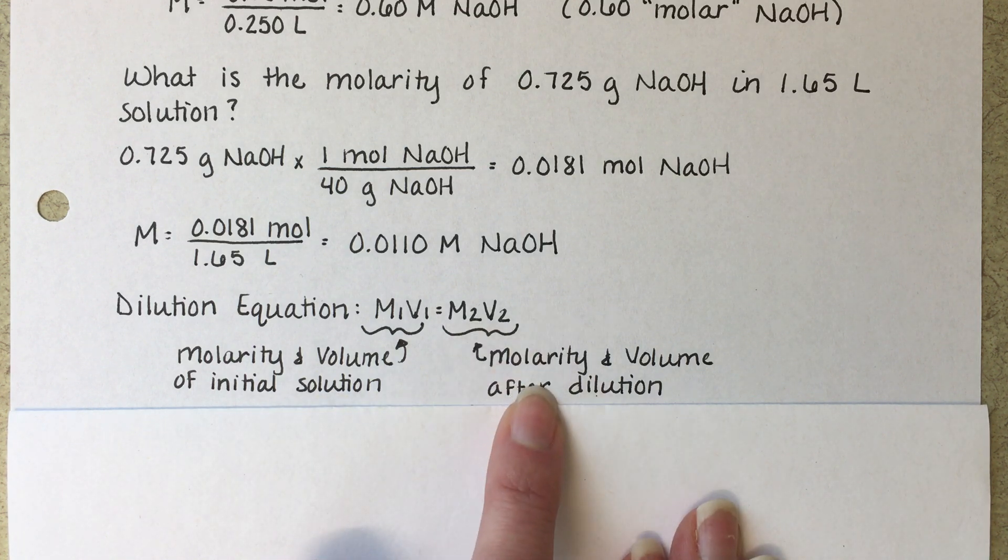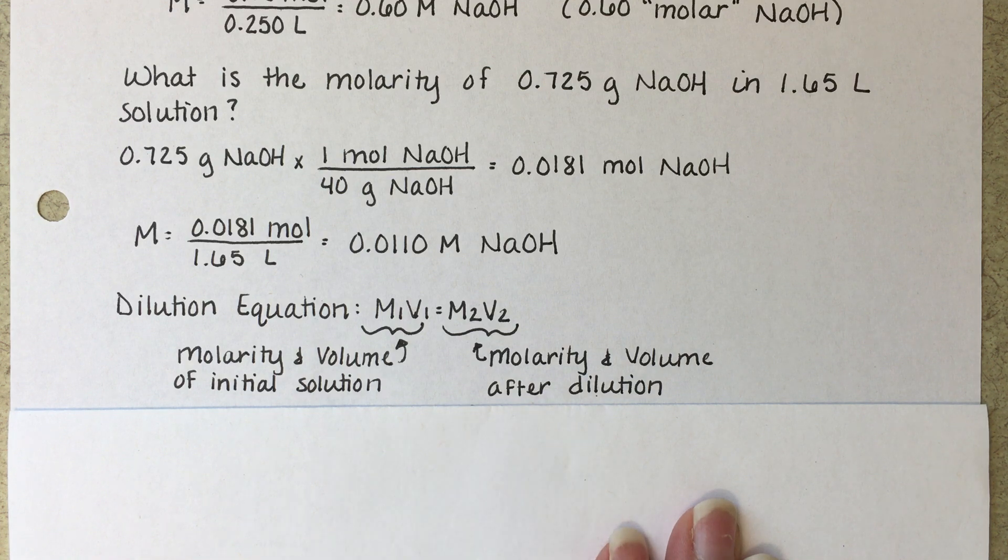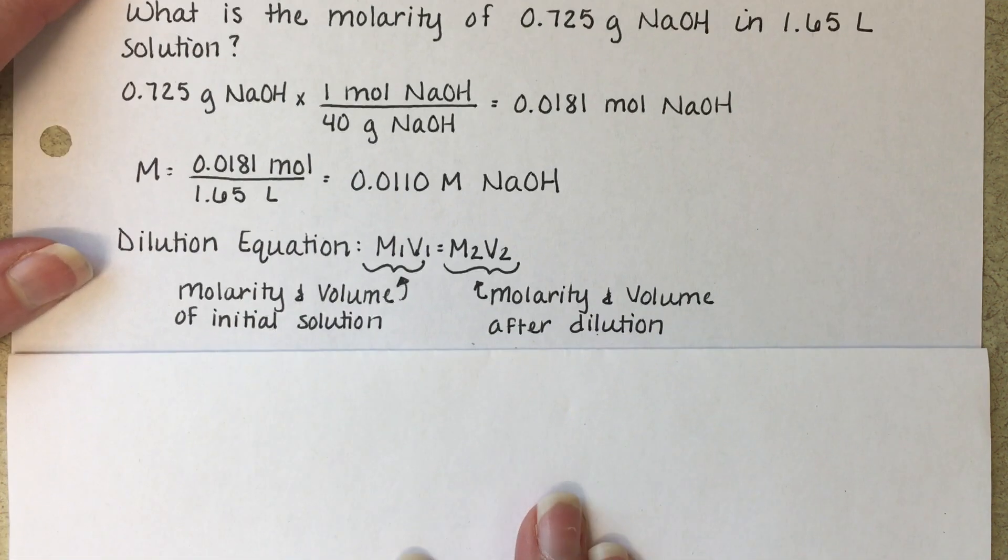The ones represent the molarity and volume of the initial solution before you've diluted it. And the twos represent the solution after you have diluted it. So this is also a pretty simple equation to use.